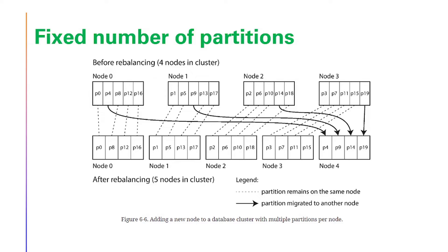Node 1, here P1, P5, P13, and P17 remains in node 1, while P9 moves to the another node.